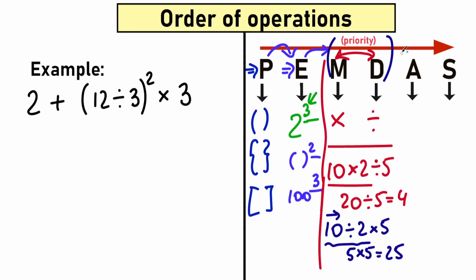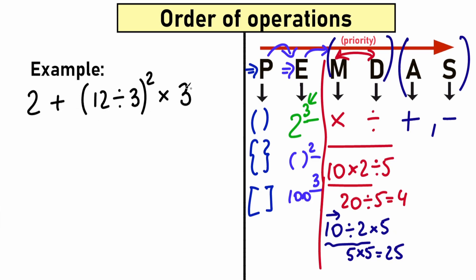The last step is addition and subtraction. This is not that hard — we can perform it in order from left to right. Now on this part we have a quick example. I want to show you how to solve this type of question using PEMDAS order of operation. We have a mixture of addition, division, parentheses, exponents, and multiplication. Every time you have such a question, write PEMDAS on the side as a checklist.